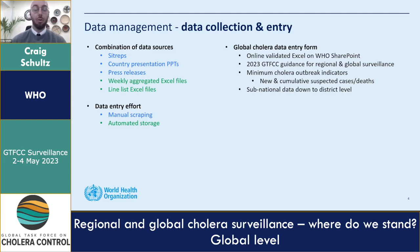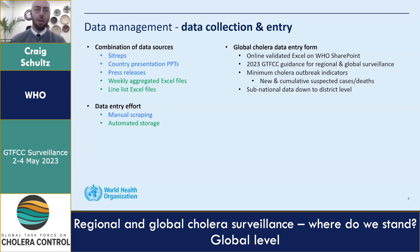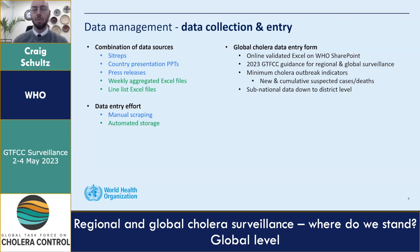These three different sources are all collected manually, which means a lot of slow data scraping, especially if a country is giving us more data at more granular levels like administrative two or even up to administrative three levels. Some countries will give us weekly aggregated Excel files or lineless Excel files, which we automate on our end. The whole idea is to have this global data entry form on the WHO SharePoint — a validated Excel file where we enter in data for every country at whatever subnational level they provide.